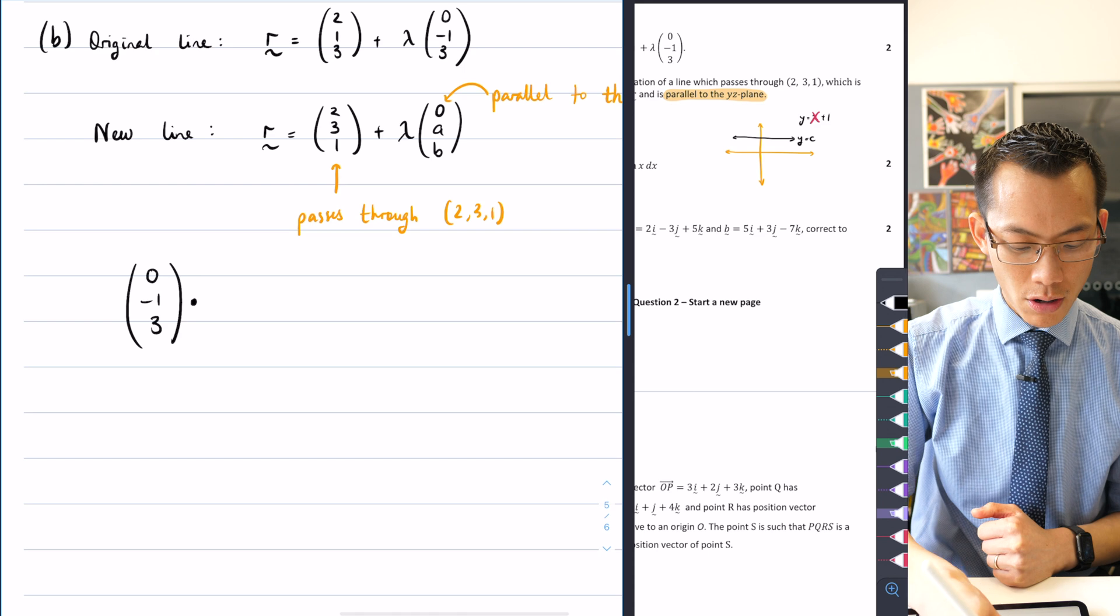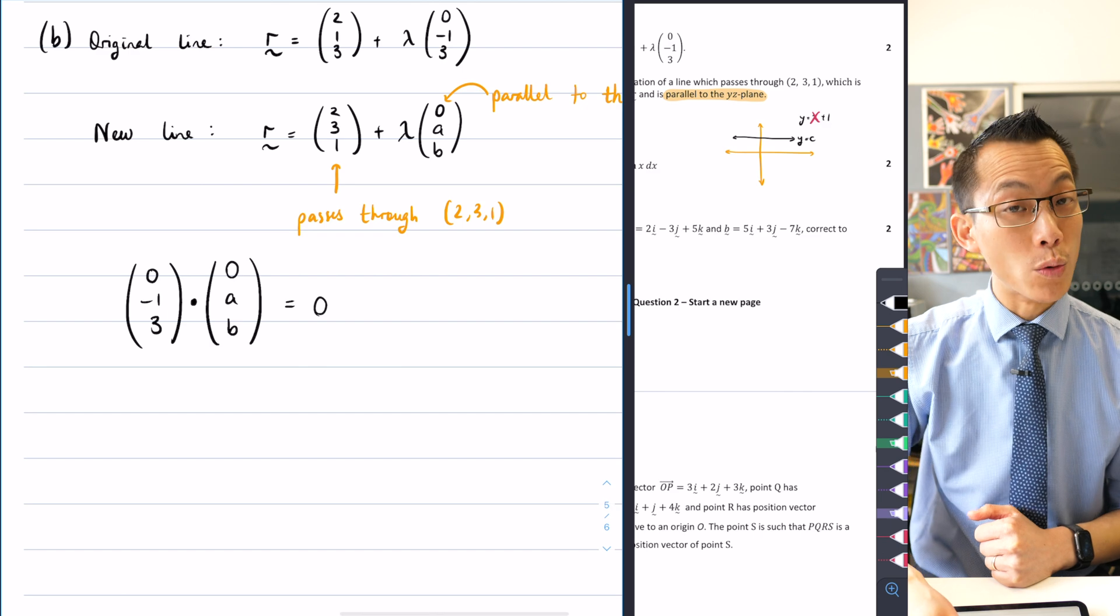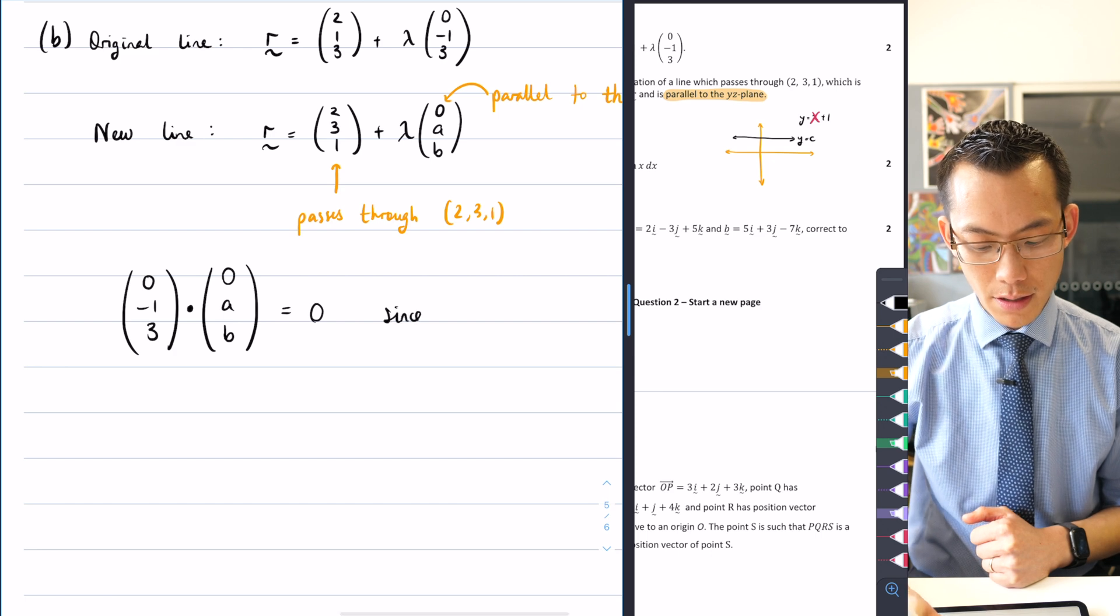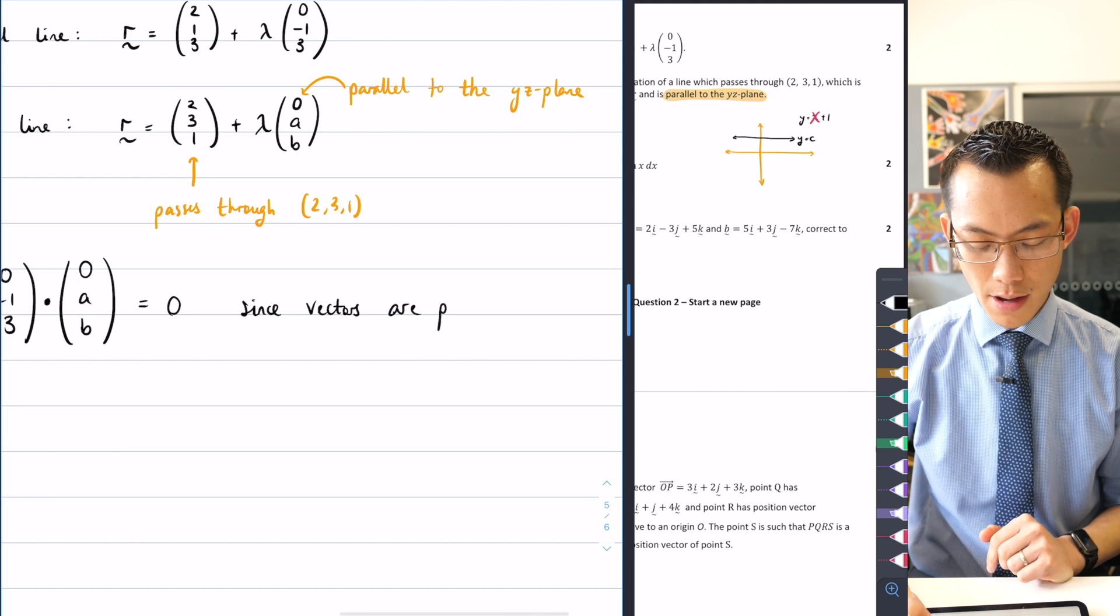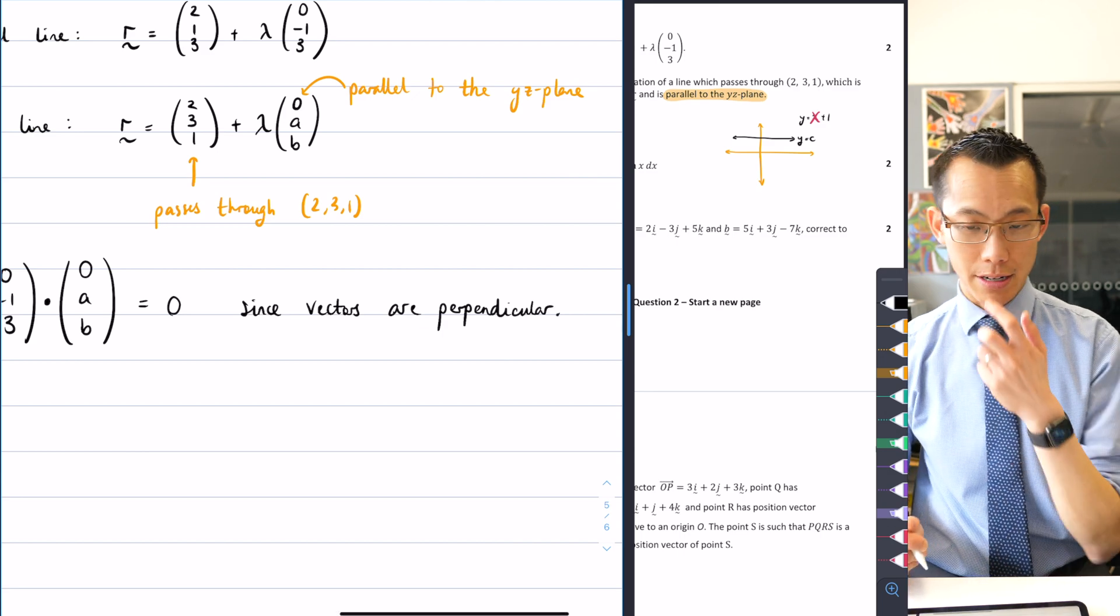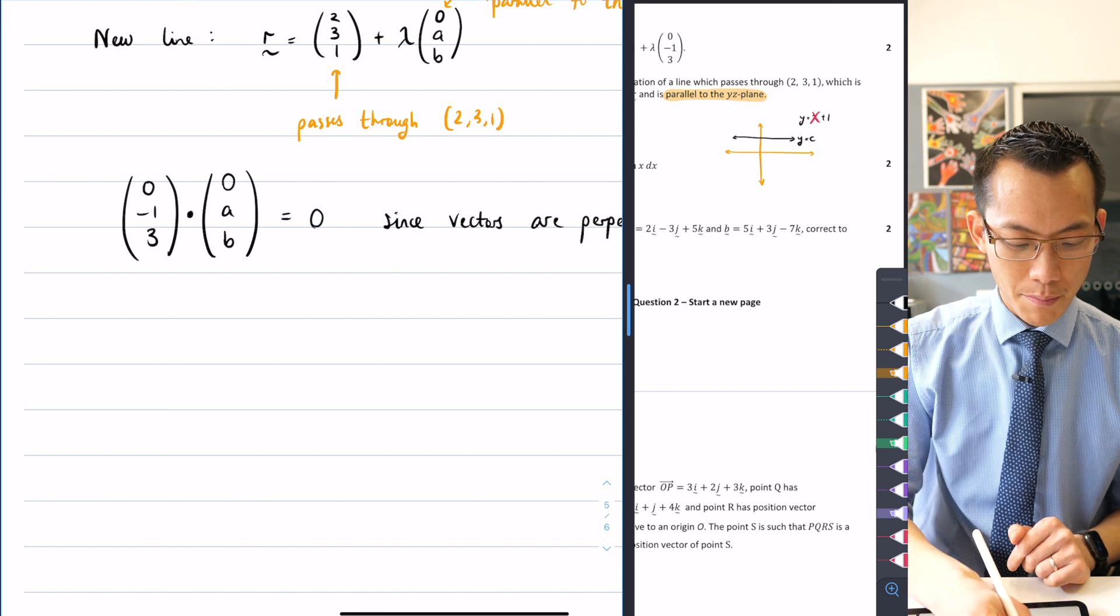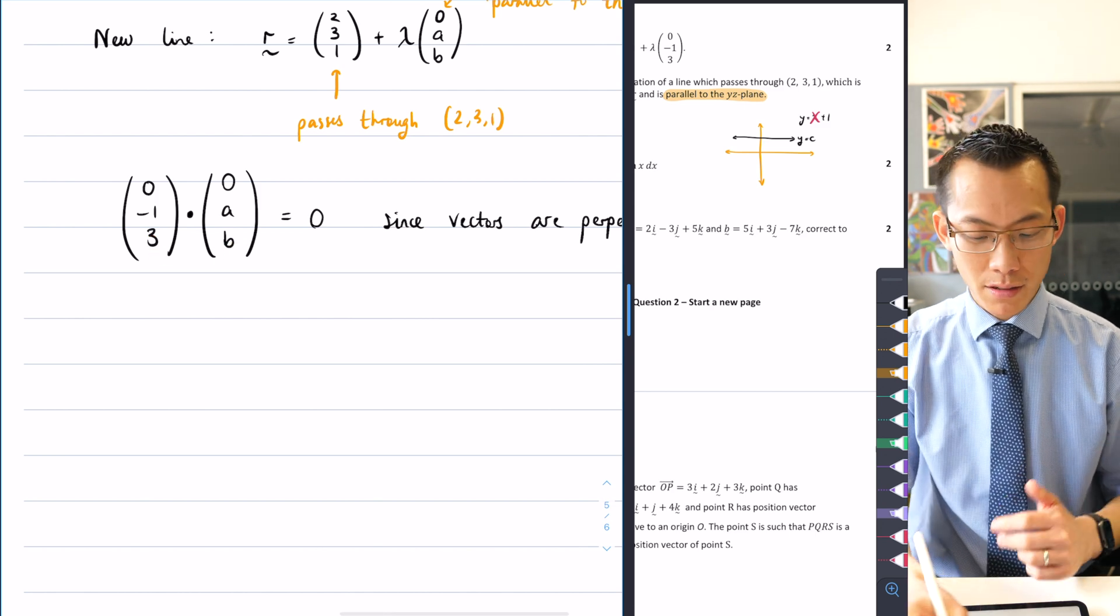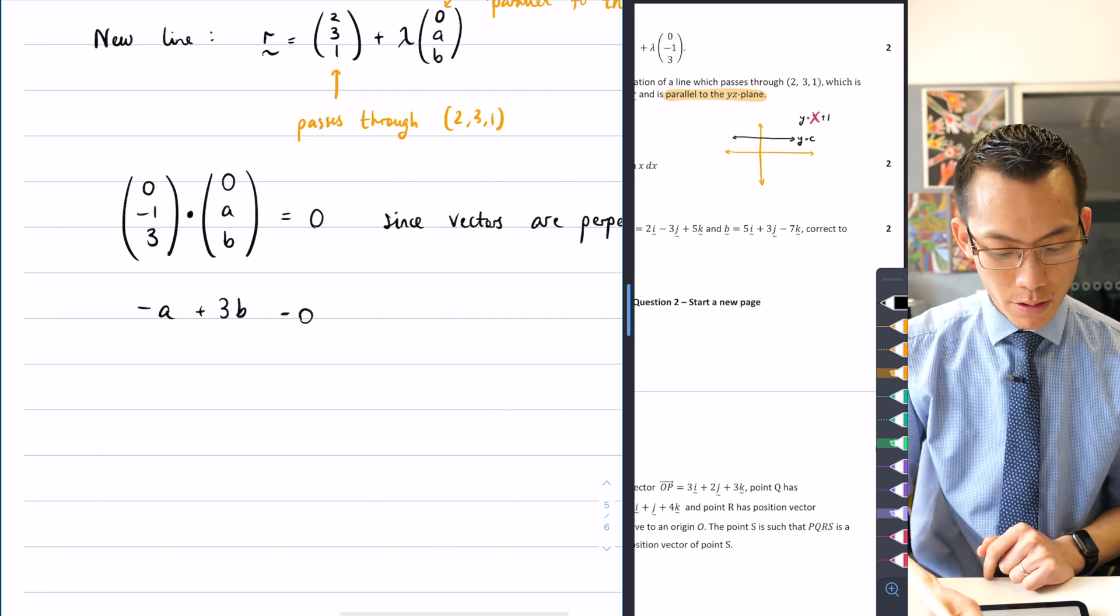When you take these two directions, two direction vectors here, if they are really perpendicular to each other, then when you do the dot product, you should find an answer of zero. So therefore, let's see what happens. I'm going to go 0, negative 1, 3, dot 0AB, that ought to equal zero. Let's just move this onto a line, since vectors are perpendicular. This is the reason. I'm not just pulling this out of a hat. The reason I'm getting a zero dot product is because of this perpendicularity. And now it's just a matter of just computing this. So I'm going to multiply my X components, which is 0, multiply my Y components, multiply my Z components. So I'm going to get minus A plus 3B equals 0.